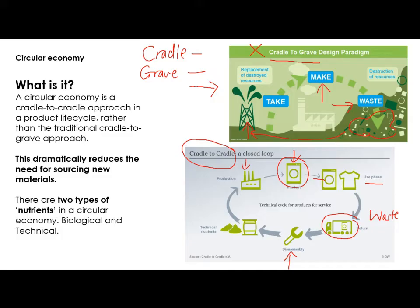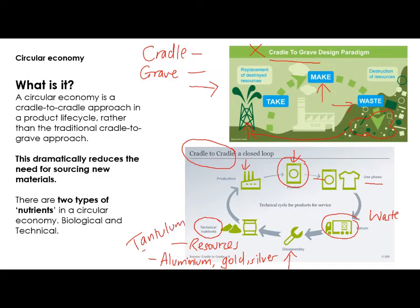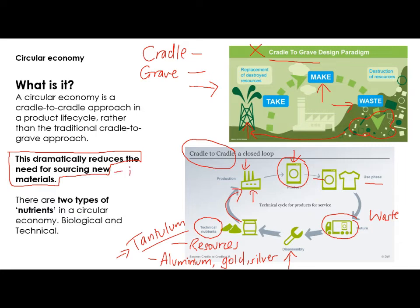Rather than the product going to waste, the idea is that it's actually returned and disassembled by the company. They're called technical nutrients — basically the resources. It could be aluminium, it could be things like gold and silver in electronics, it could be something called tantalum, which is used in every single mobile phone and actually comes from Africa and the Congo and has to be mined at great expense to the environment and to the people there. The idea is that those resources, rather than going to waste, go back into production again and are constantly reused, kept in this loop rather than needing new materials. This dramatically reduces the need to source new materials, which reduces the impact on the environment.